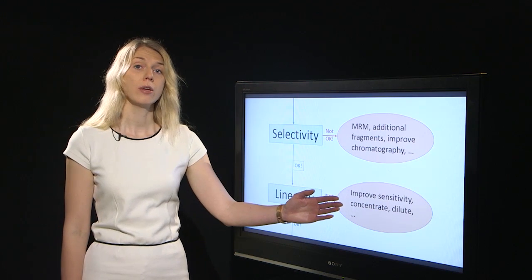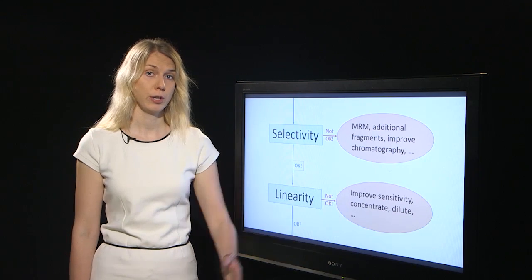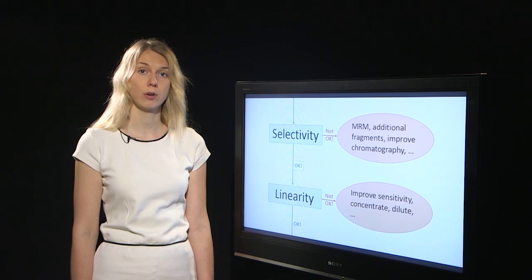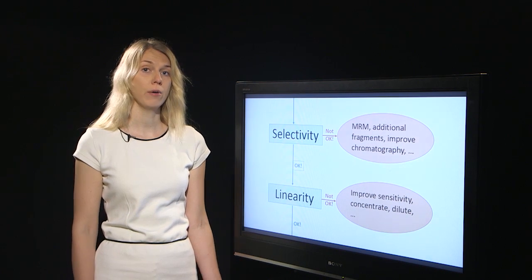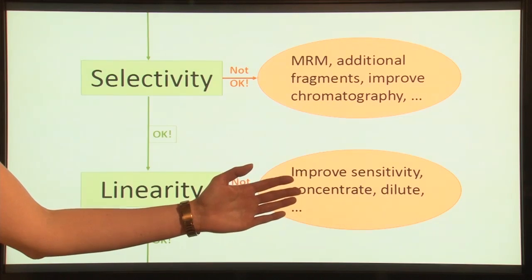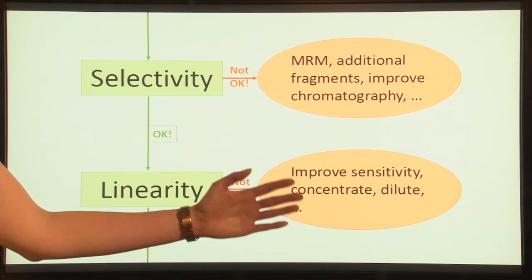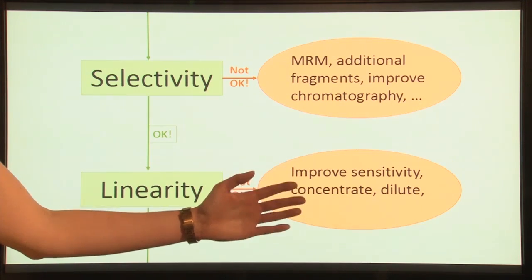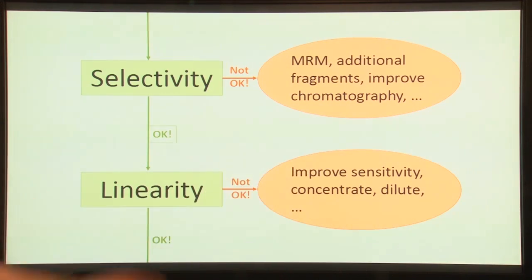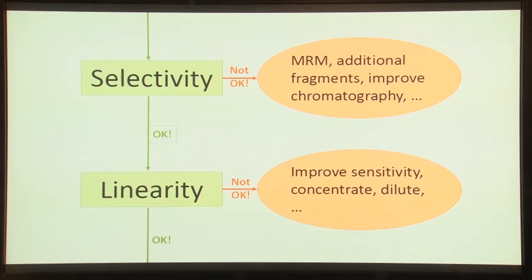You could also try concentrating or diluting your samples, depending on how the obtained linear range and the desired concentration range are related. However, if you make modifications to your method, these modifications may also influence parameters that have been evaluated previously. So if you make modifications you should start the validation from the beginning.